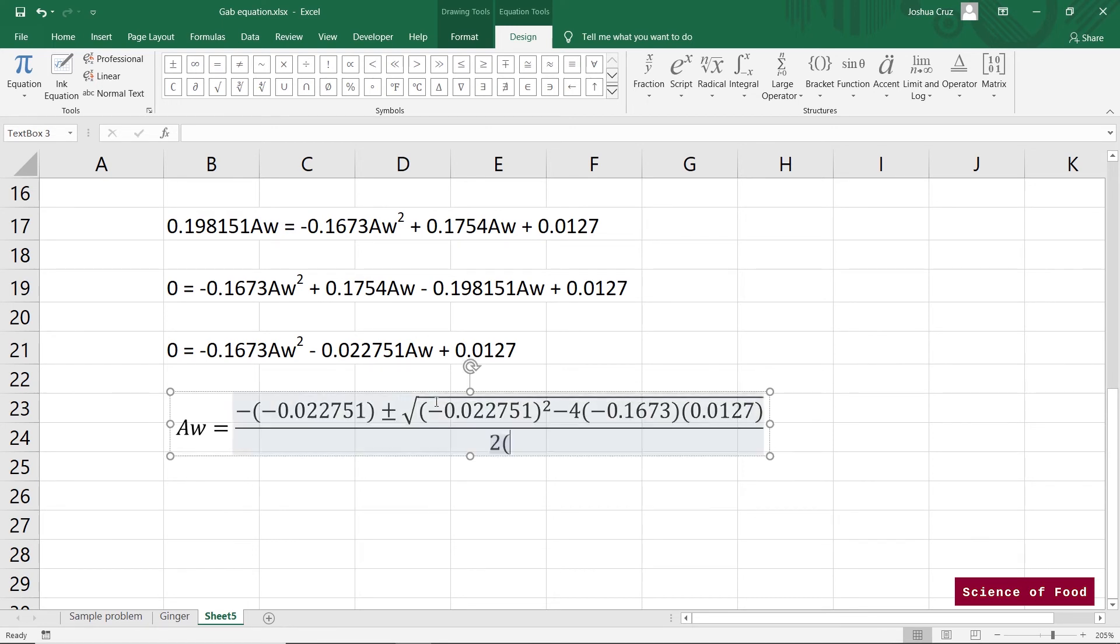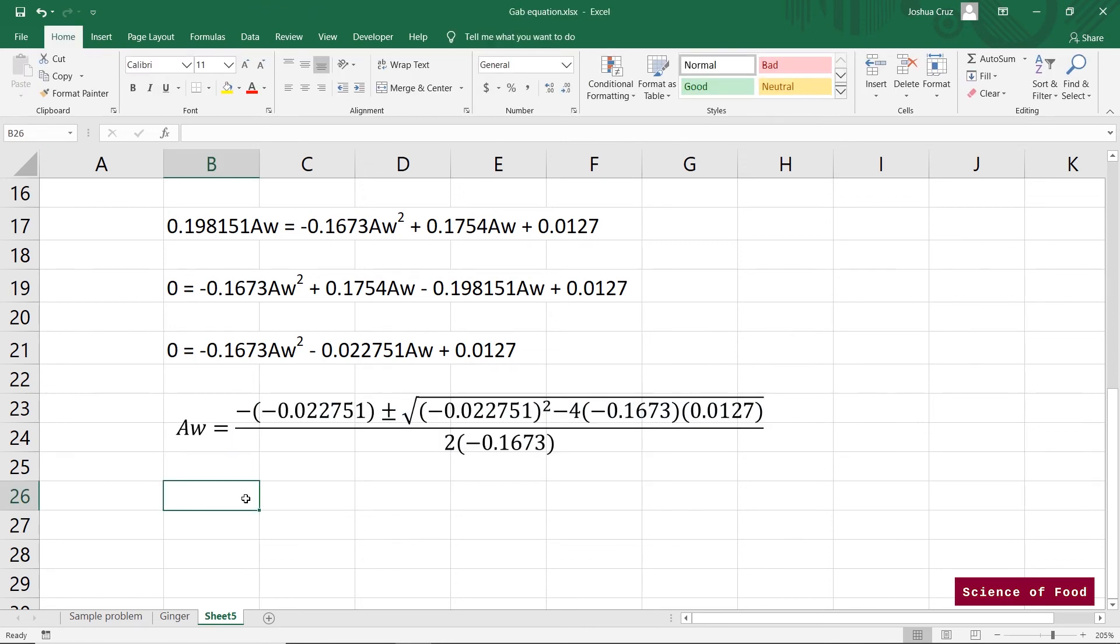So I'll just let you calculate that. And we would have two answers because you'd get the positive and another one for the negative. So the answer would be 0.21579 and negative 0.35178. Of course, you can't have water activity below 0. So we'll just cross this off. This is the water activity value that we would be using.